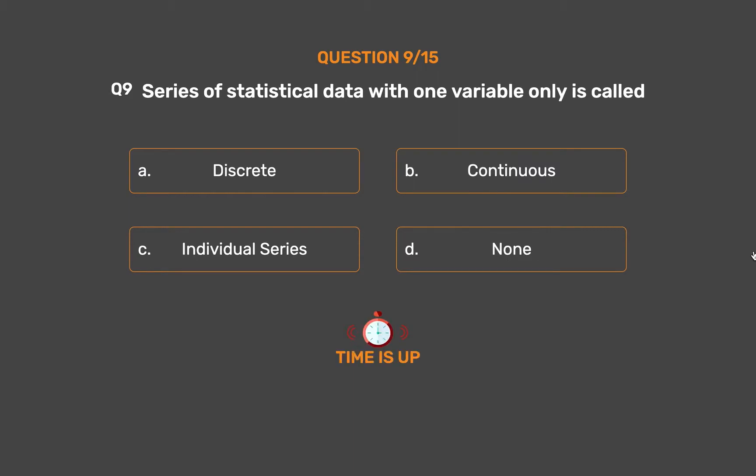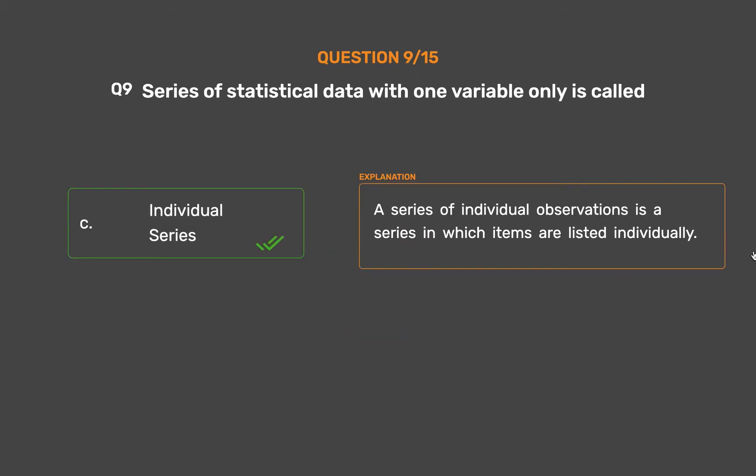The correct answer is Option C: Individual series. A series of individual observations is a series in which items are listed individually.